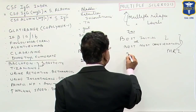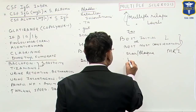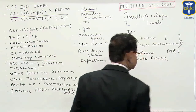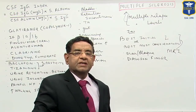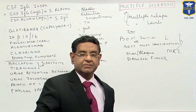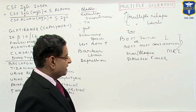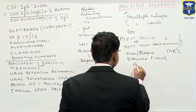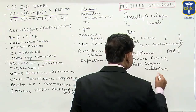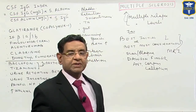On MRI we can see scars and plaques. Classically, we see the Dawson finger sign — in the periventricular area, there is demyelination. It also classically involves the anterior corpus callosum, which is specific to multiple sclerosis because stroke normally does not involve the anterior corpus callosum.